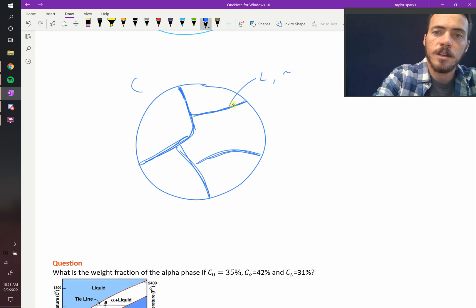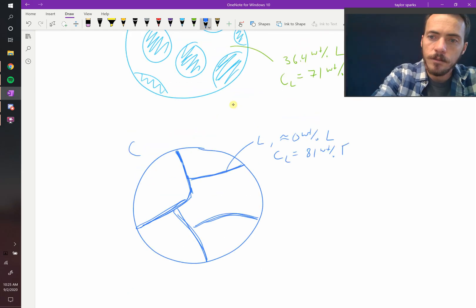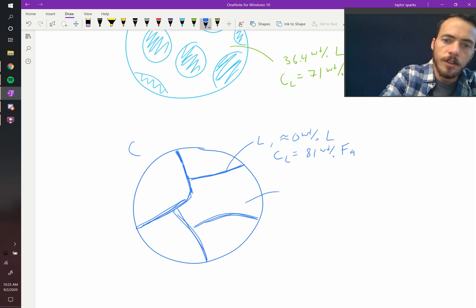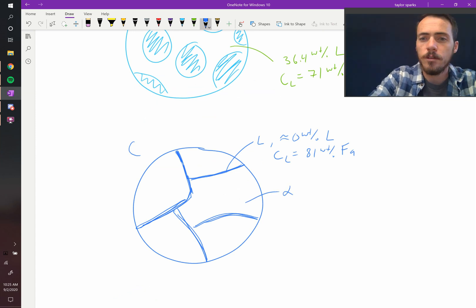Here we're going to say that this is liquid. And it's essentially zero weight percent liquid. And the composition of that liquid is 81 weight percent of phthalite.